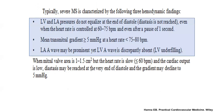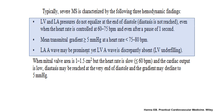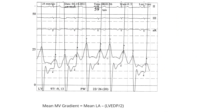Another finding suggesting severe MS: the LA V-wave may be prominent, yet the LV A-wave is discrepantly absent. The LA is trying to push flow across the obstructed mitral valve, but the LV still does not see much flow — producing a big LA A-wave but no A-wave on the LV, meaning no S4. Big LA A-wave yet no S4 is a hallmark finding in mitral stenosis.